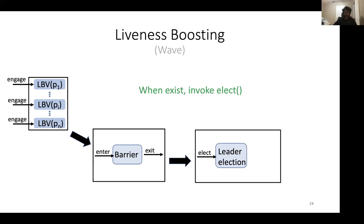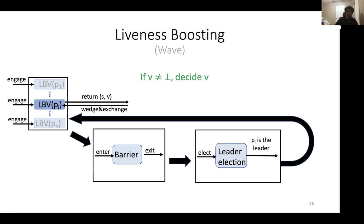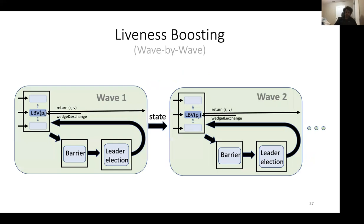When the leader eventually exits the barrier — once enough leaders have entered to allow exit — the leader invokes elect. When the wave's leader is elected, say process Pi, we invoke wedge-and-exchange in the LBV of that elected leader and forget about all other LBV instances. If wedge-and-exchange returns a value other than bottom, we can decide on it. Otherwise, we take the returned state as the parameter for the engage invocations in the next wave's LBVs.